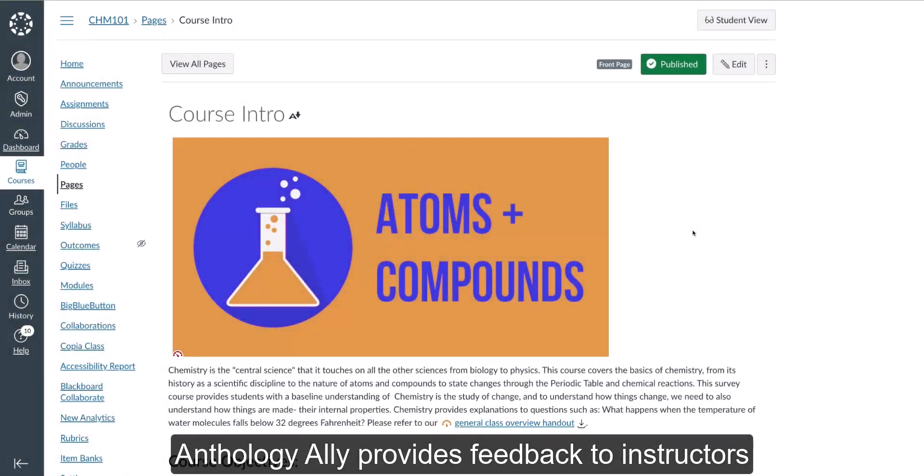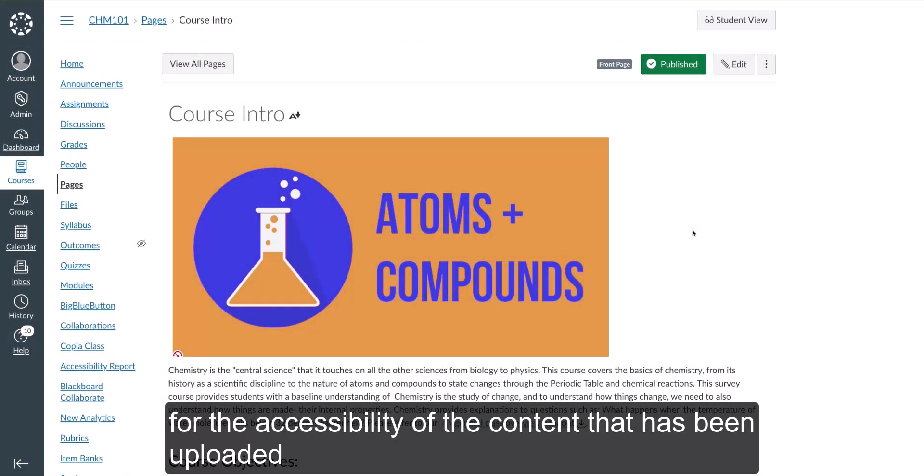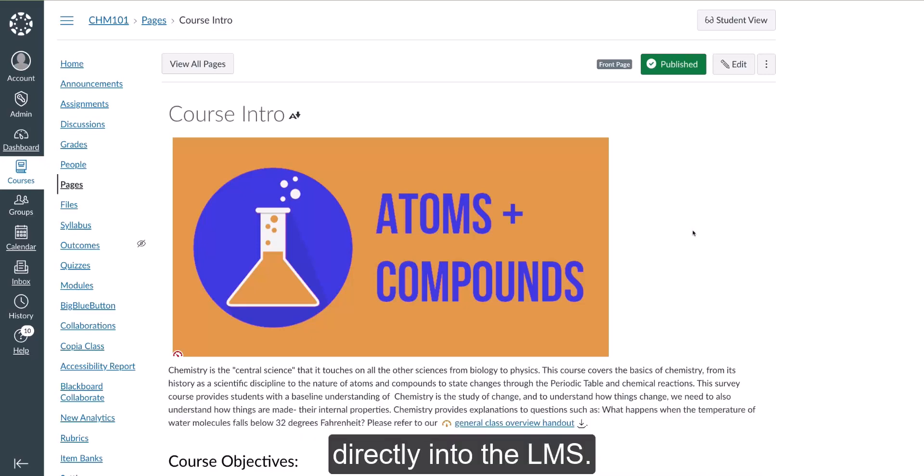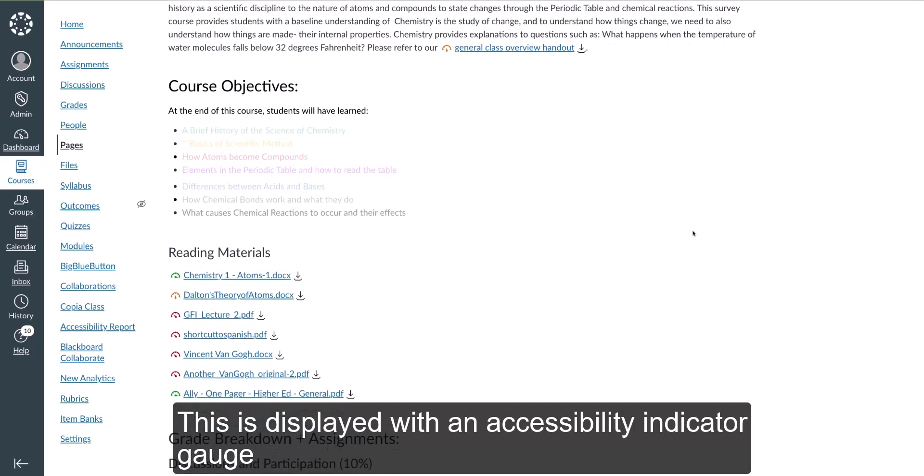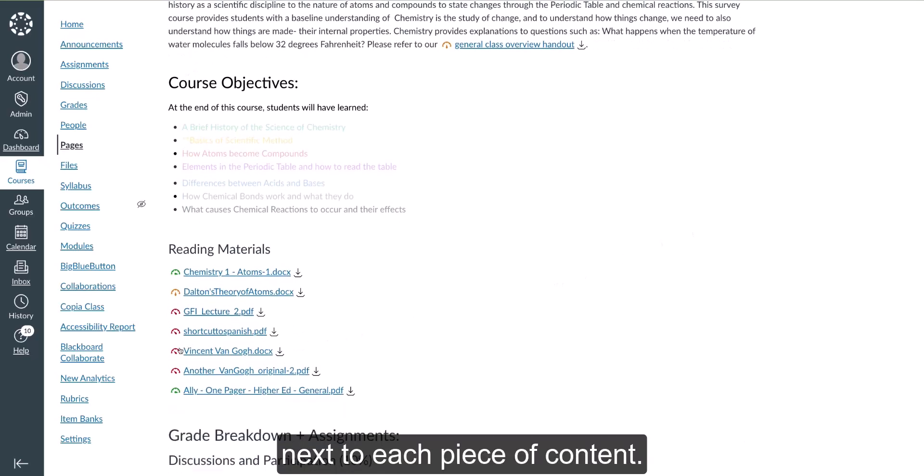Anthology Ally provides feedback to instructors for the accessibility of the content that has been uploaded directly into the LMS. This is displayed with an accessibility indicator gauge next to each piece of content.